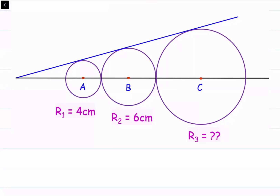Before we proceed, let's rename the radii: r1 as a, r2 as b, and r3 as c. So this length is a, this will be b, and this is c. The key property we use is that the radius is perpendicular to the tangent.